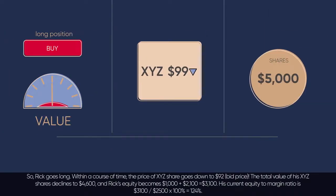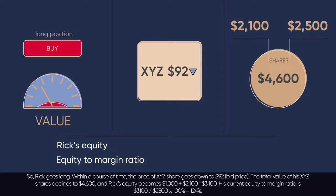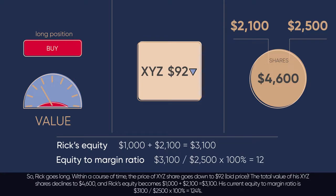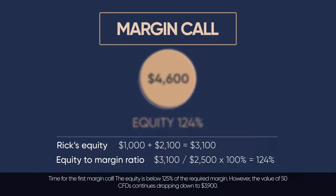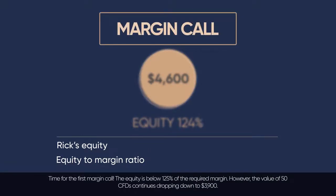So, Rick goes long. Within a course of time, the price of XYZ shares goes down to $92 bid price. The total value of his XYZ shares declines to $4,600, and Rick's equity becomes $1,000 plus $2,100, which equals $3,100. His current equity-to-margin ratio is $3,100 over $2,500 times 100%, which equals 124% — time for the first margin call. The equity is below 125% of the required margin.